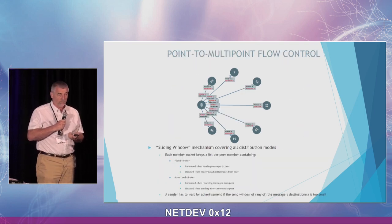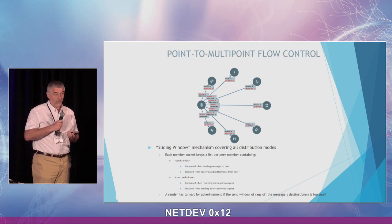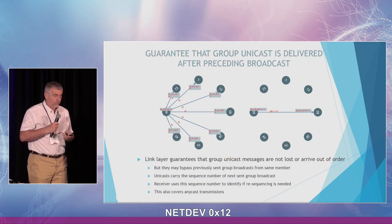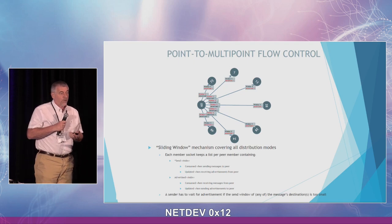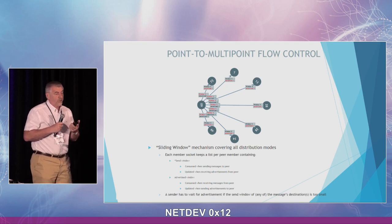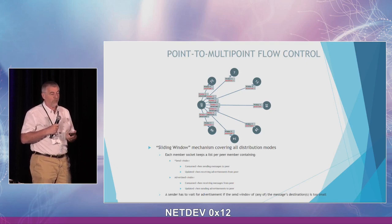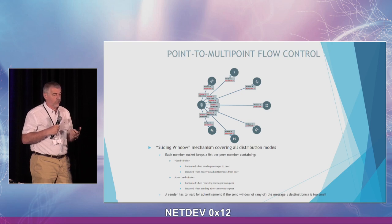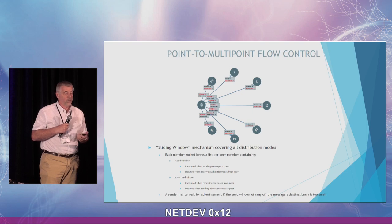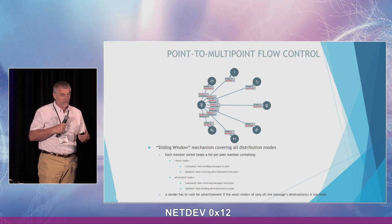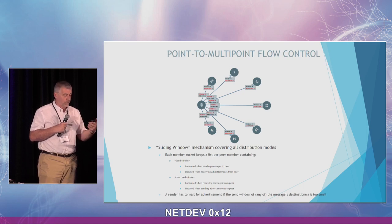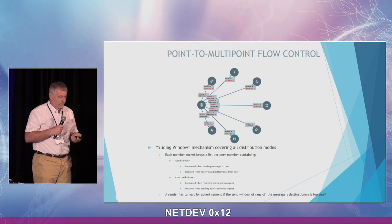Next is flow control. For point-to-point and point-to-multipoint, each socket keeps a record for all other members, including a window per member and how much has been advertised to each. When member 60 sends a broadcast, it checks the window for all members; if any window is too small, it waits for more advertisement. For unicast, it checks only the window for that particular destination. Nothing magic there.